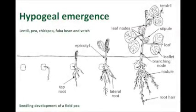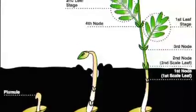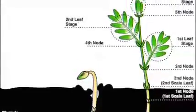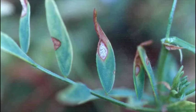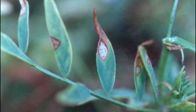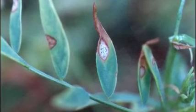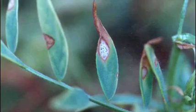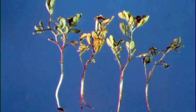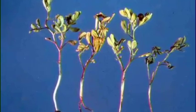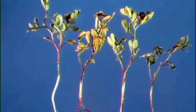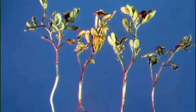Lentil plants are susceptible to Ascochyta leaf blight at any growth stage, from seed to seedling to maturity. The disease can affect all above-ground plant parts, causing tan, spot-like lesions that have dark margins. These lesions will sometimes contain tiny black pycnidia that are characteristic of the disease. These disease symptoms tend to appear as small patches of blighted plants in the field.